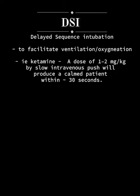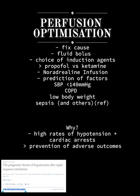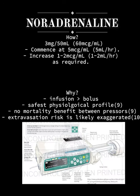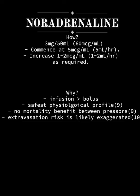We should also consider delayed sequence intubation, where you use procedural sedation to optimize ventilation and oxygenation prior to intubation. Regarding perfusion, we need to fix the cause — for example, controlling hemorrhage or decompressing a chest for a tension pneumothorax — and administer an appropriate fluid bolus based on the patient's physiological parameters. We need to choose our induction agent wisely, such as propofol versus ketamine. I would advocate for a noradrenaline infusion as our vasopressor to prevent hypotension, cardiac arrest, and adverse outcomes. Infusion is superior to bolus in maintaining therapeutic drug levels, and noradrenaline has the safest physiological profile among vasopressors, with extravasation risk likely exaggerated.